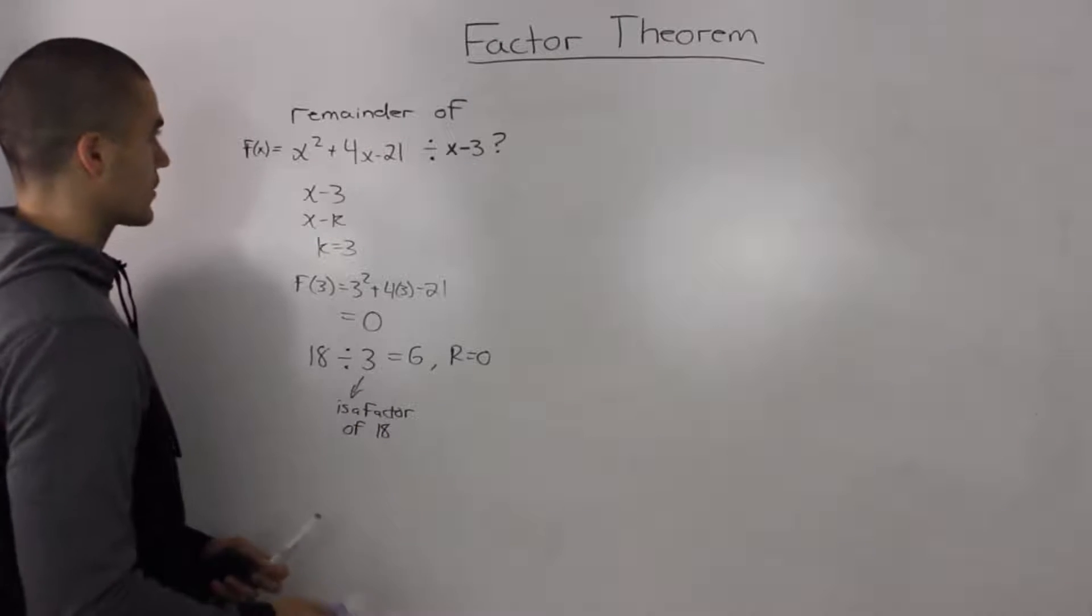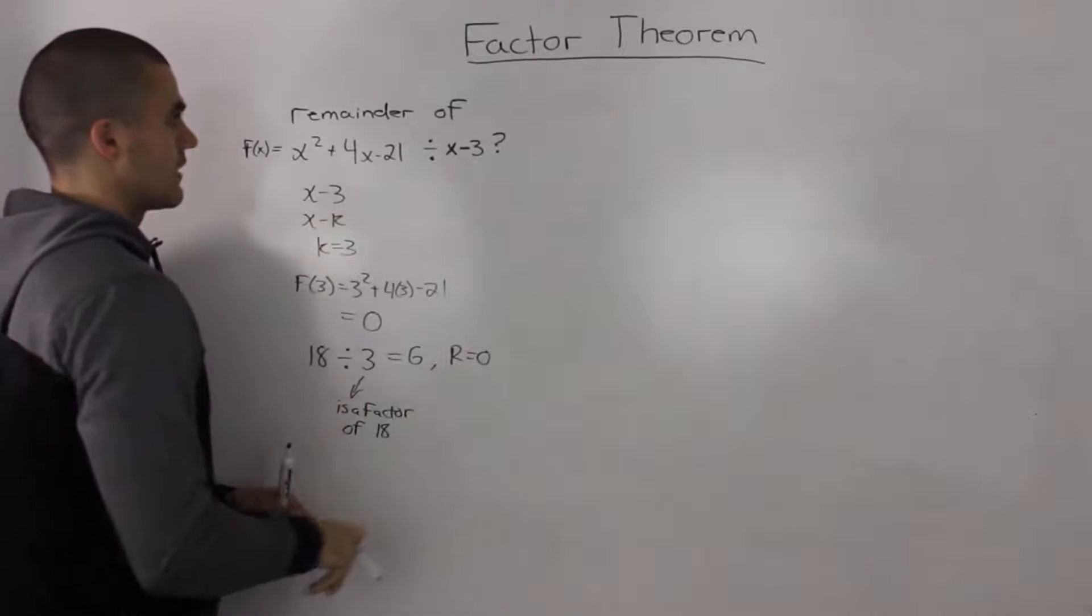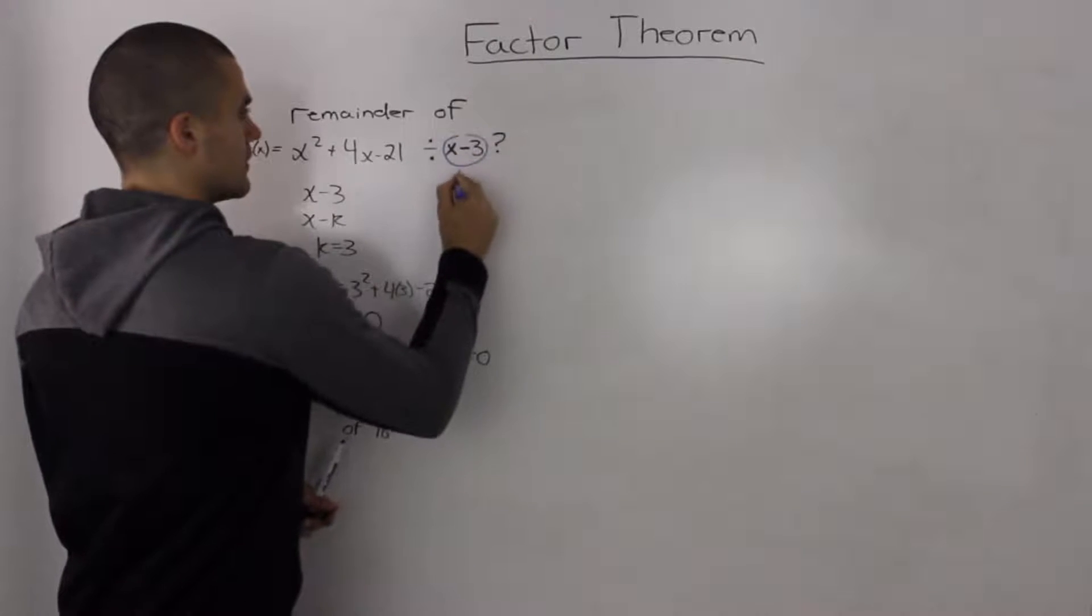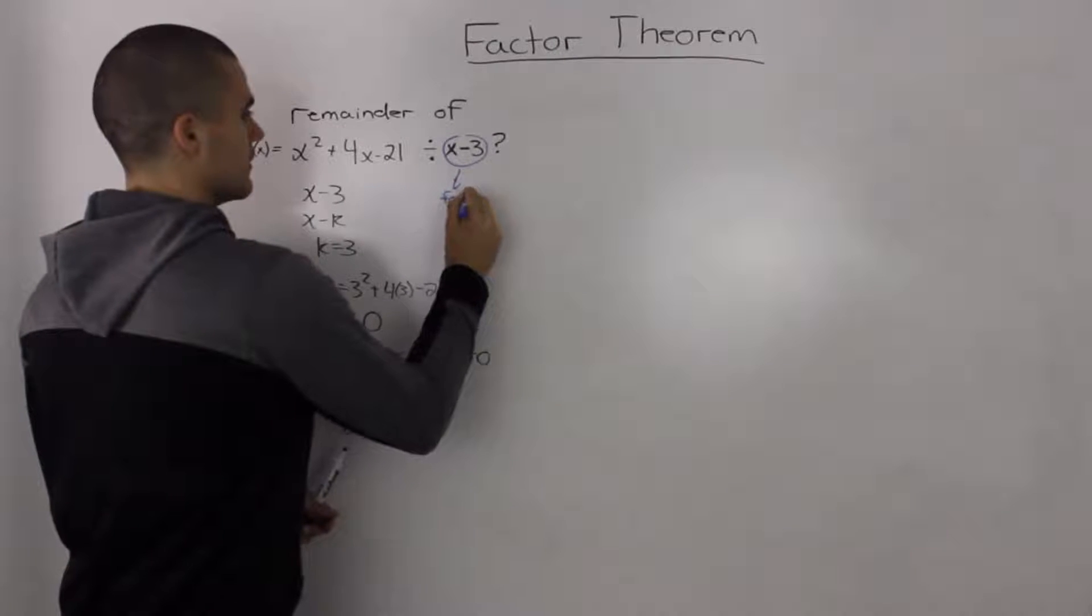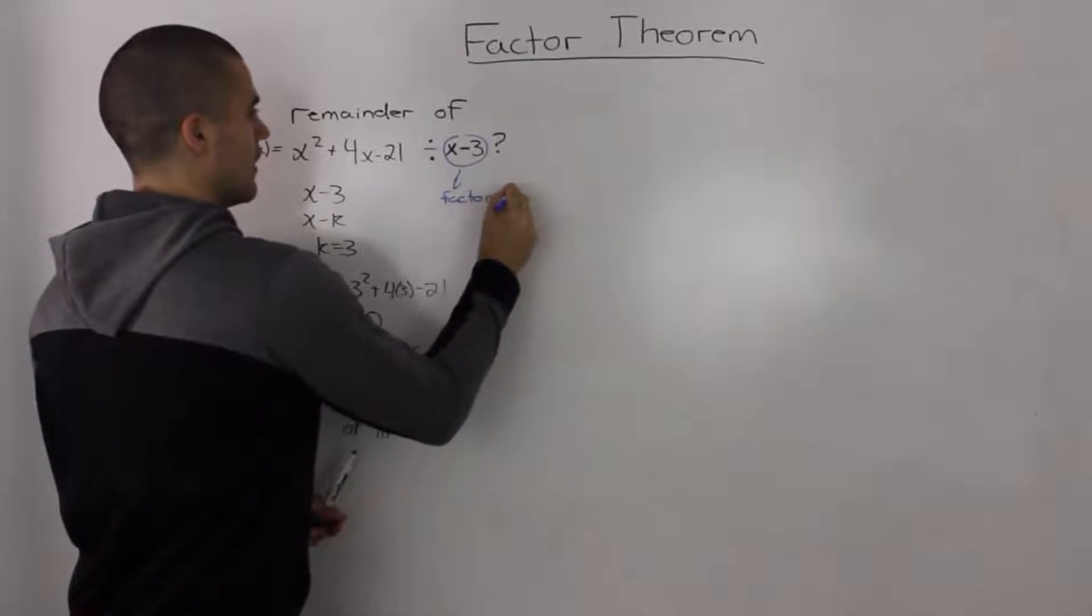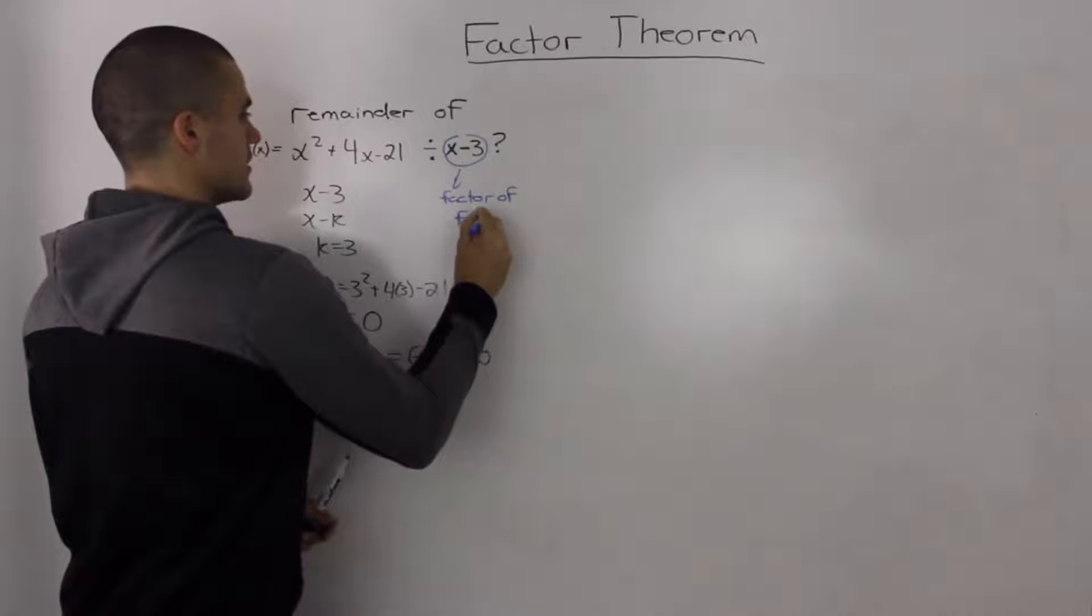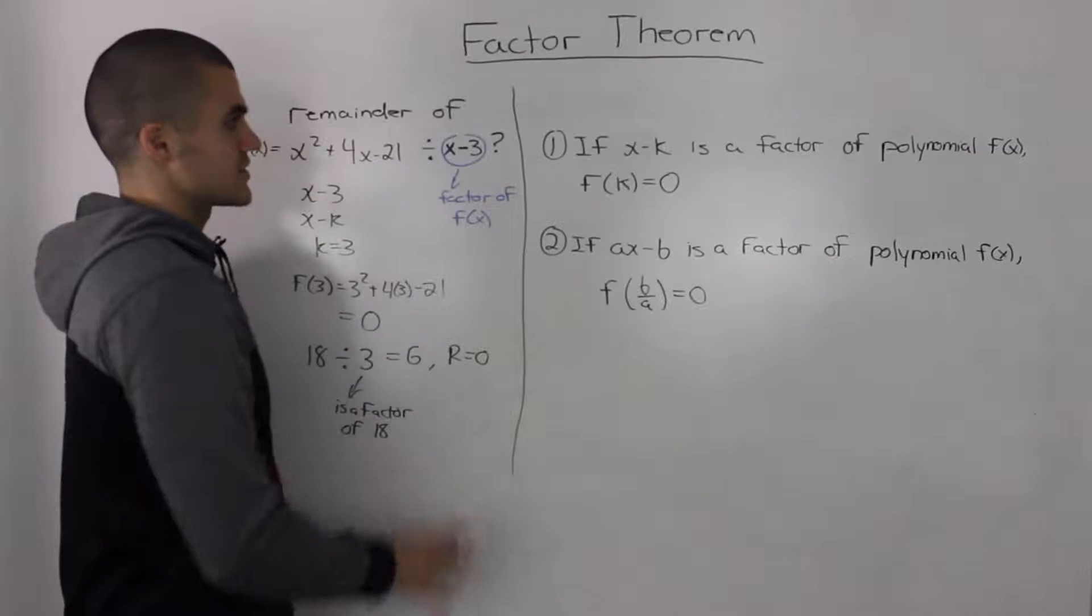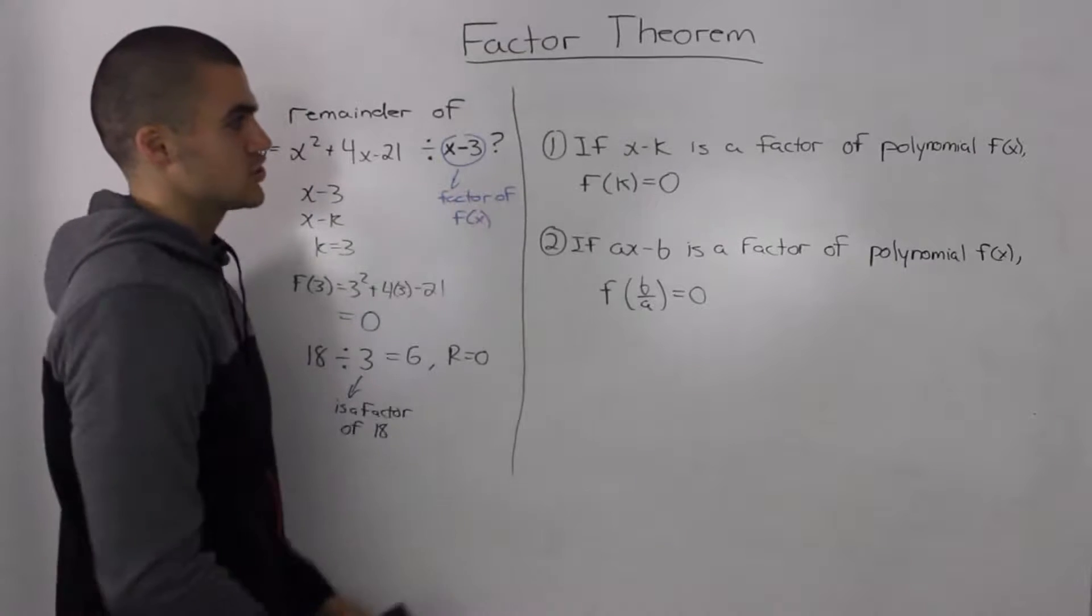So in our case, if we go back to our example here, x - 3 is a factor of f(x) because the remainder is 0. Let's take our result and summarize it in a general way.